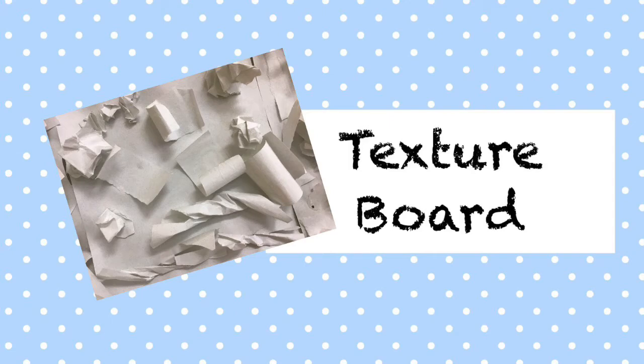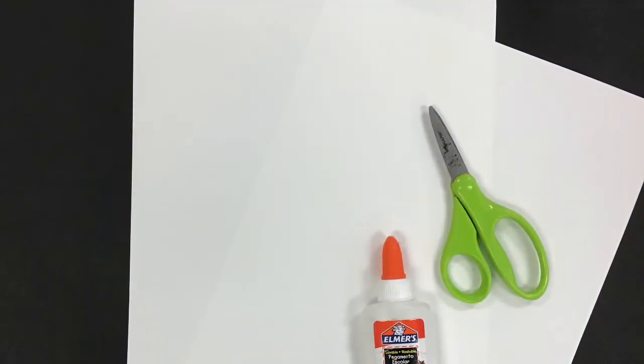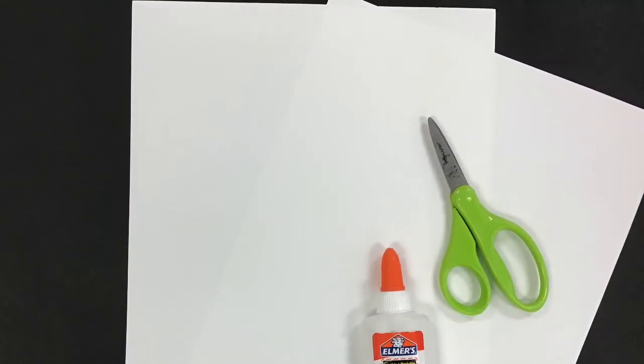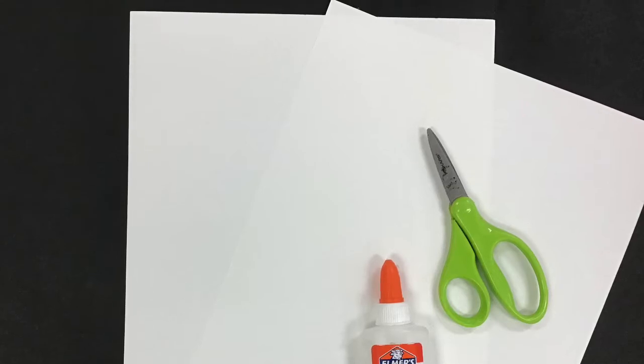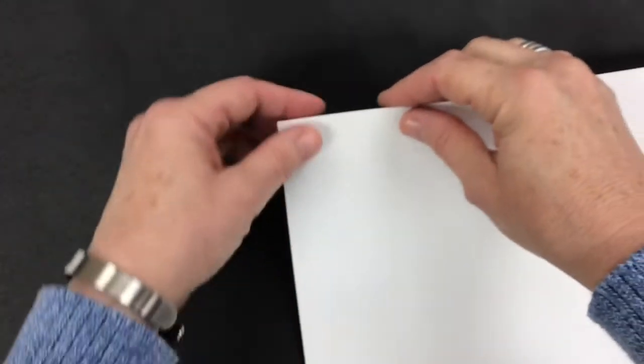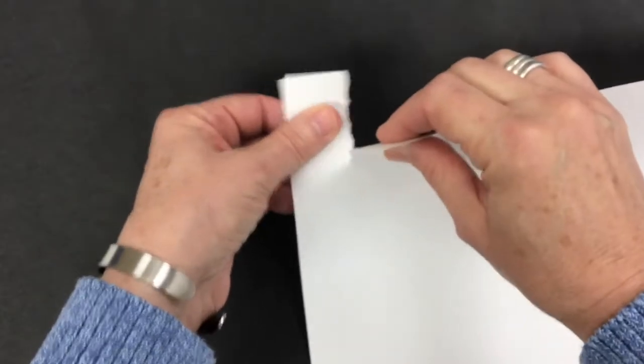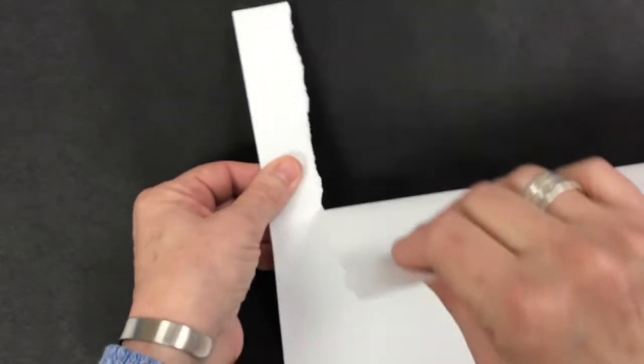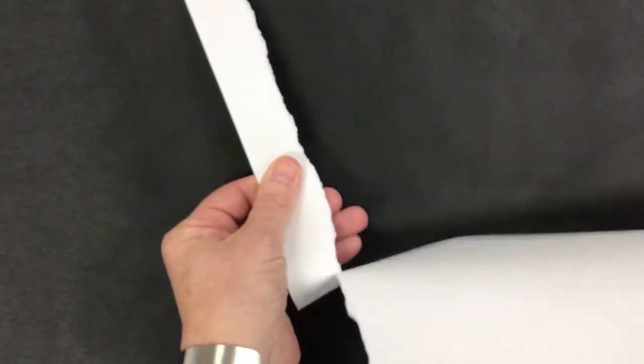For this texture board project, you'll need two pieces of paper (any color), a little bottle of glue, and some scissors. First, we're going to take one of the papers and tear it—this is one way that you can change the paper. I'm just going to tear a big strip off like that.